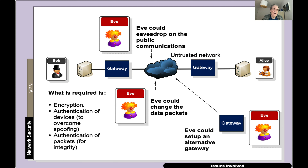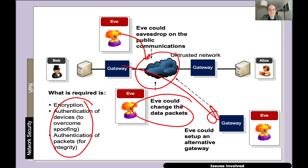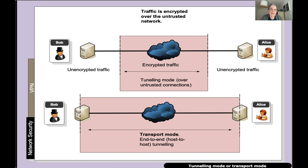This is what we have in terms of our tunnels using our public networks. If we're using a public network connection, Eve could eavesdrop, so we need encryption and we need authentication of devices against spoofing. We also need to make sure that we have integrity with the data packets that are sent, because Eve could change data packets or set up a malicious gateway that Bob connects to, such as with a free Wi-Fi access point. We need to protect against these threats.